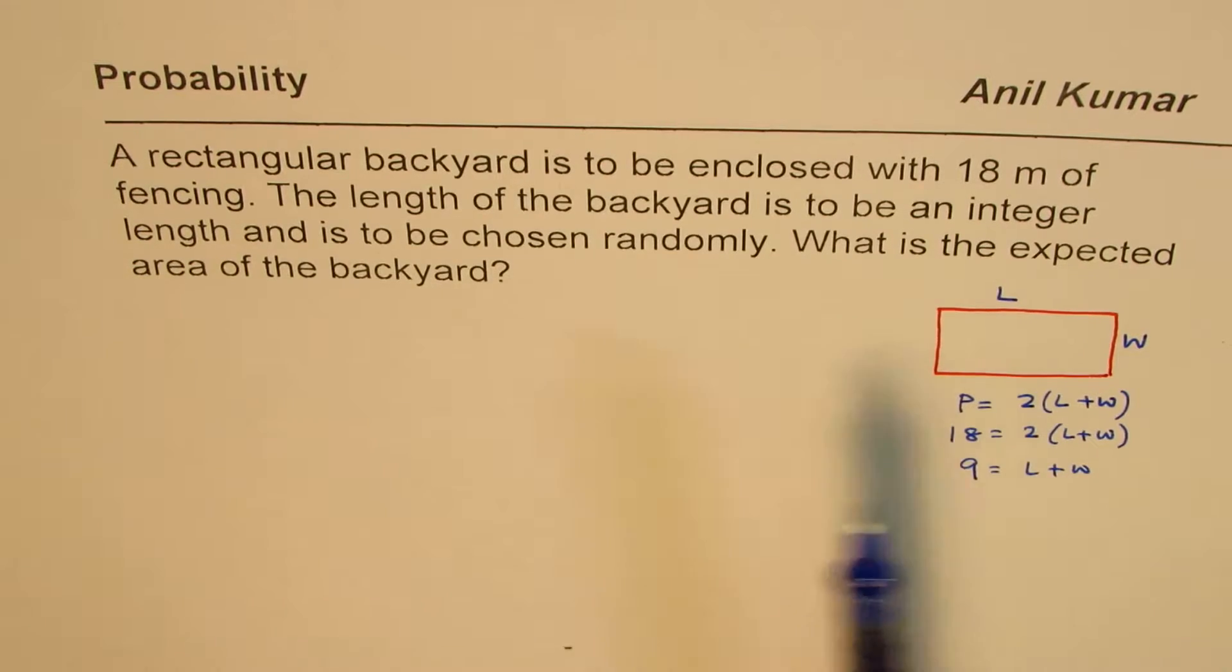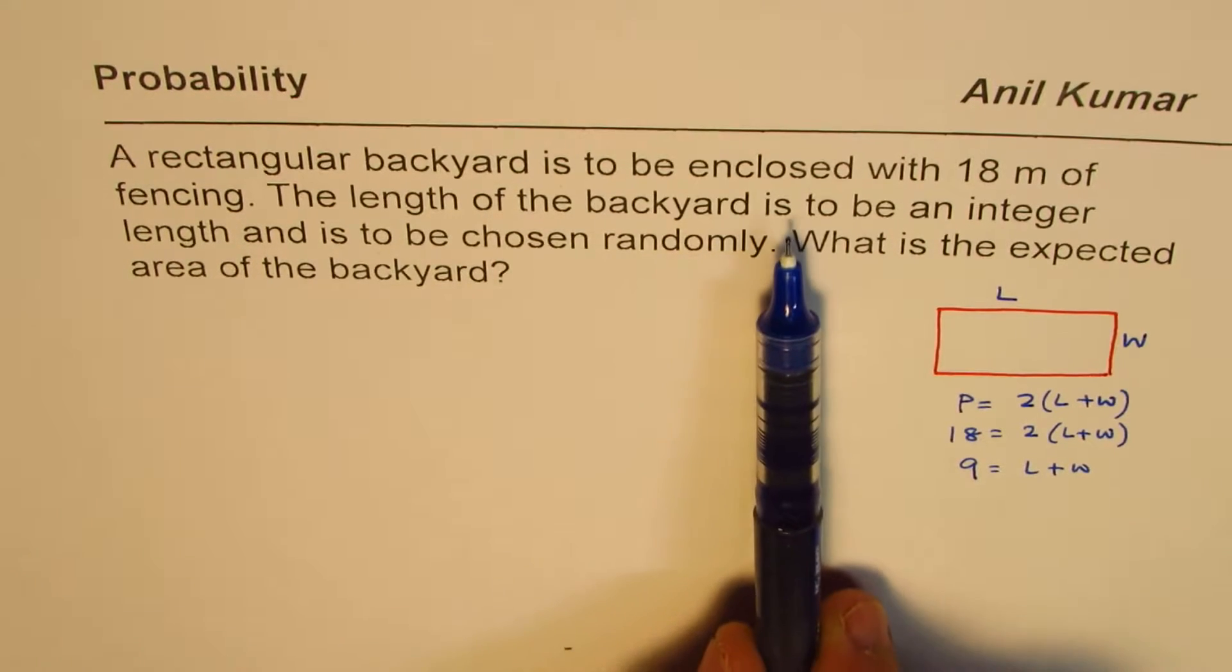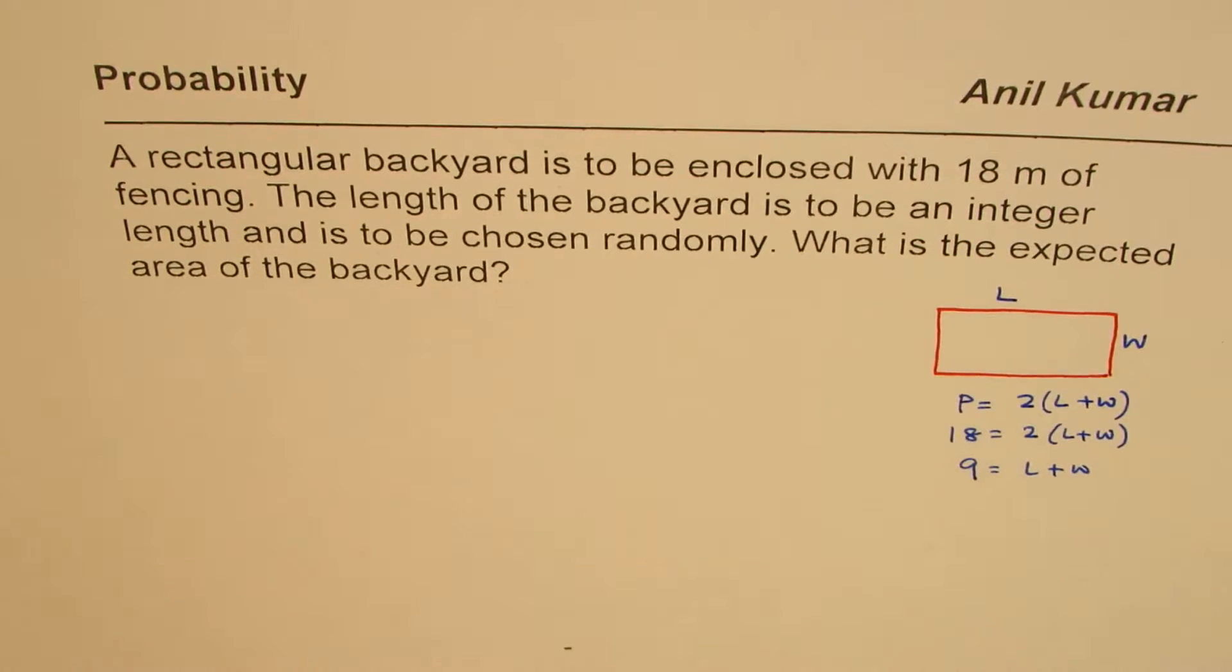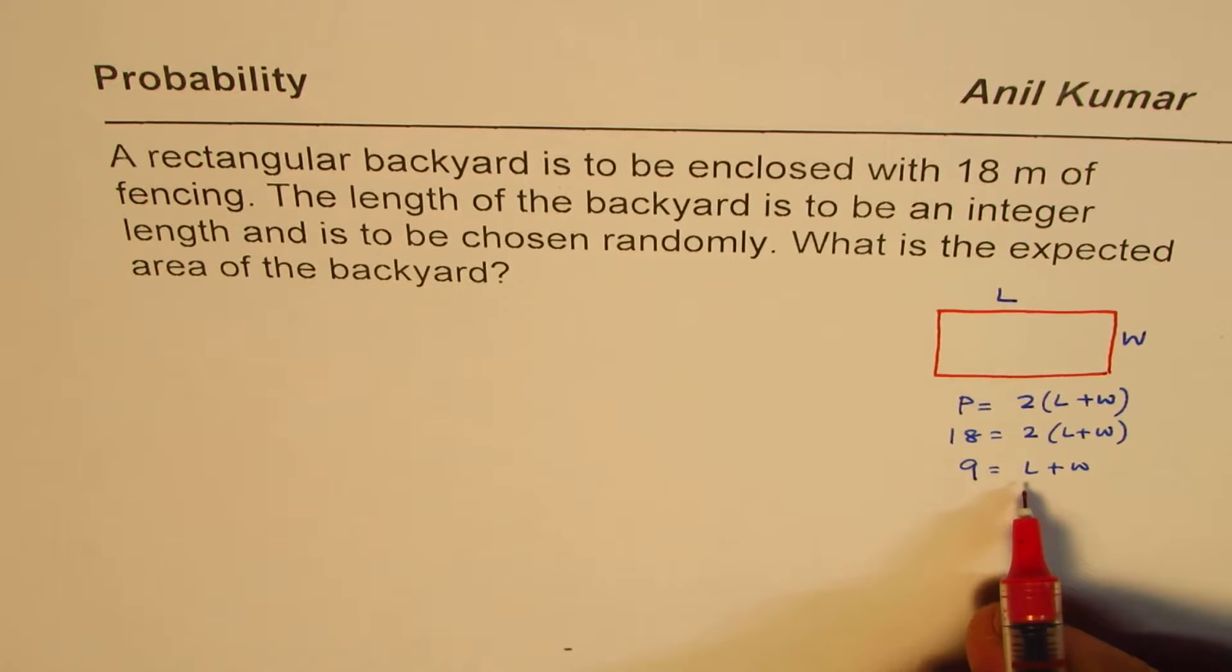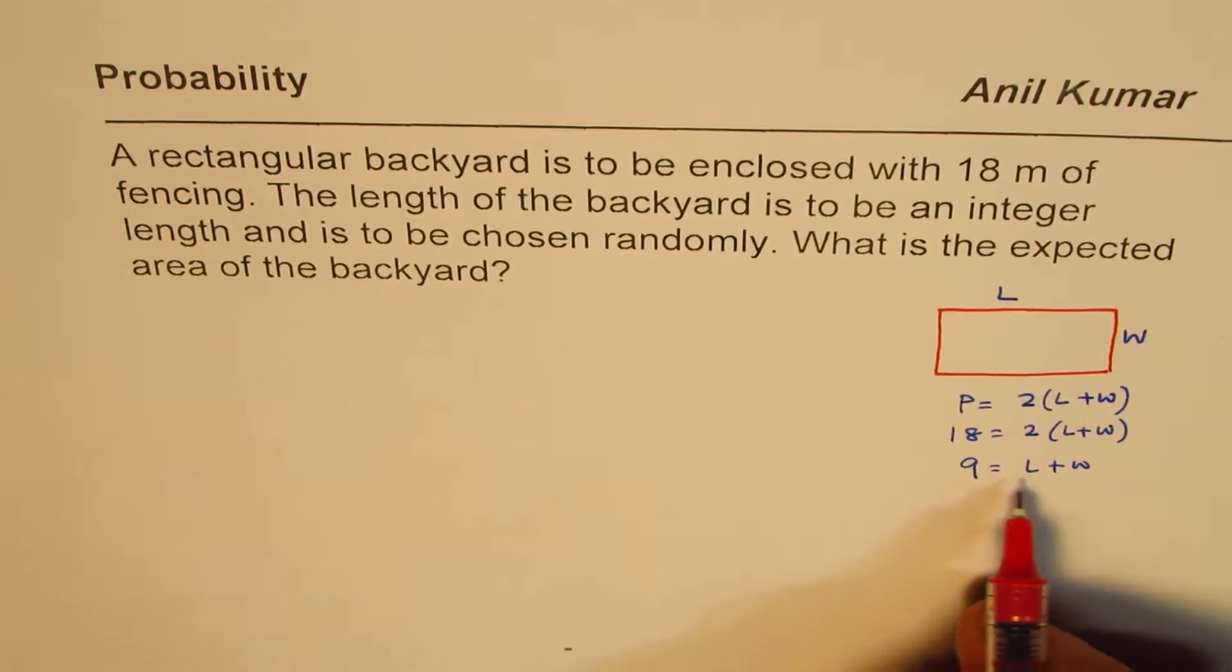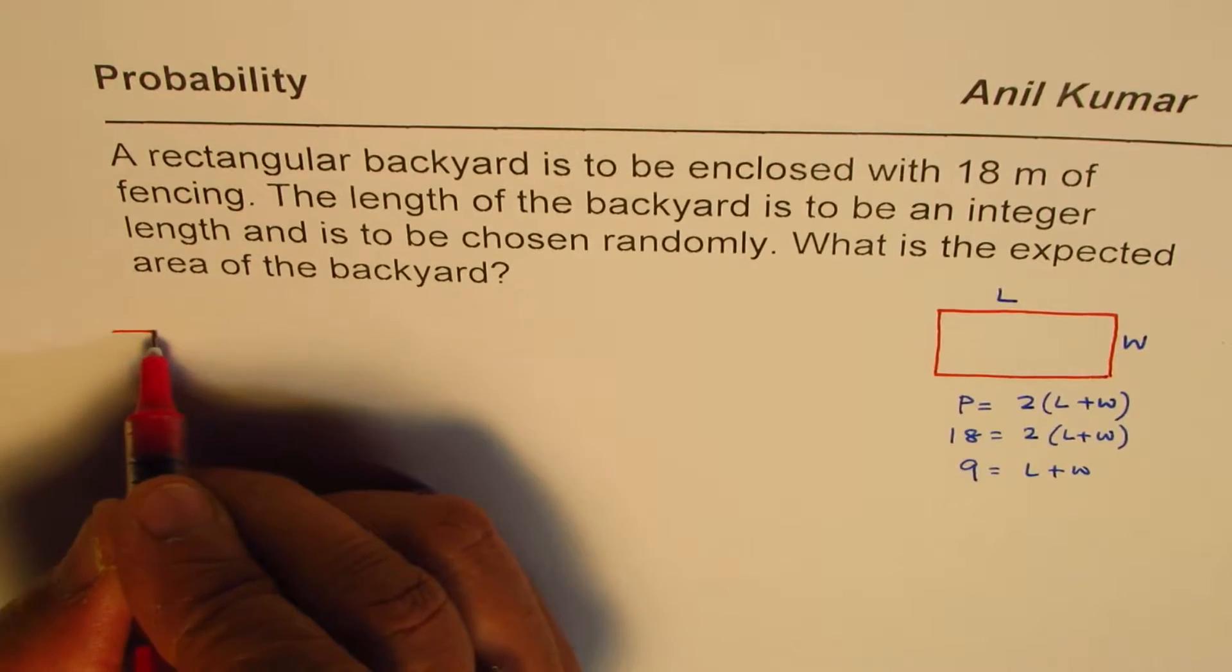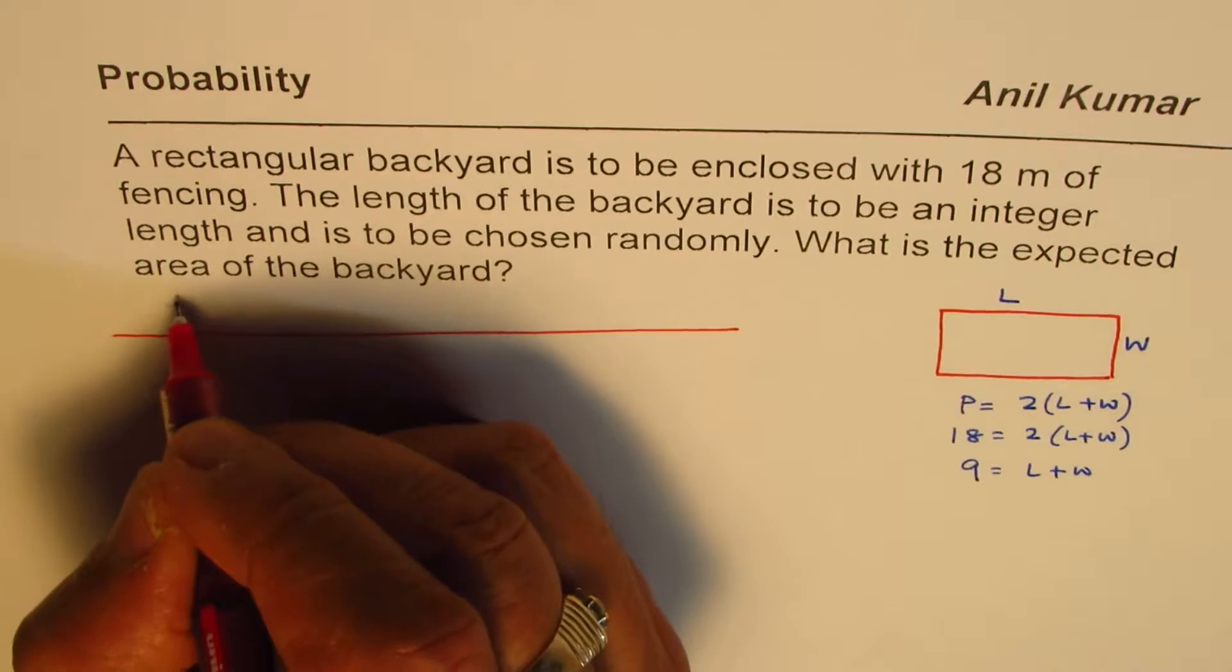Now it says the length of the backyard is to be an integer. So what we will do here is length could take some values which are 1 to 8. So those are the 8 values which length can take. So we'll make a table.